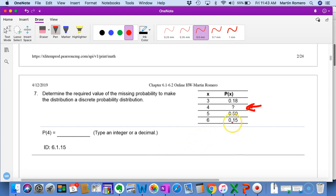So in this case you're looking for the missing value. You have 0.18, 0.4, and 0.15. If you add that up, this missing number has to be calculated so the sum equals one.